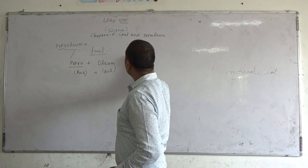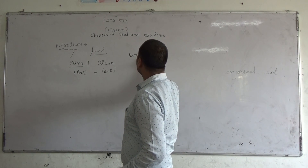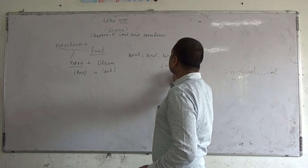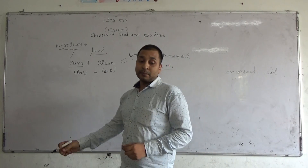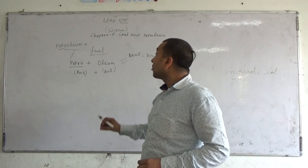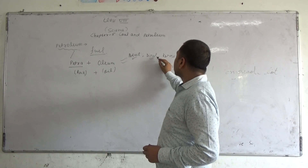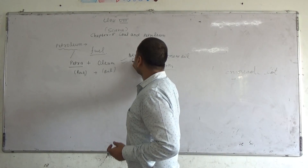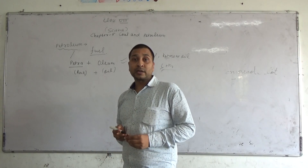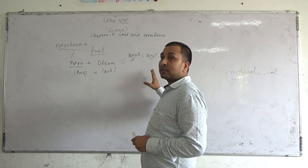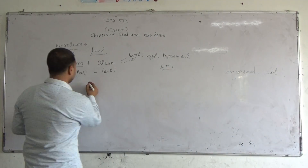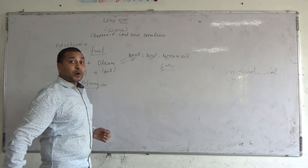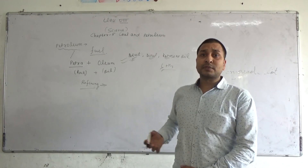The petroleum products include petrol, diesel, kerosene, and CNG. Now, from where do we get diesel and petrol? We refine the petroleum and we get petrol, diesel, and kerosene. So what is the refining process? It is the process of separating different types of oil into layers.